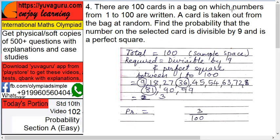Next, there are 100 cards in a bag on which numbers from 1 to 100 are written. A card is taken out from the bag at random. Find the probability that the number selected is divisible by 9 and is a perfect square.